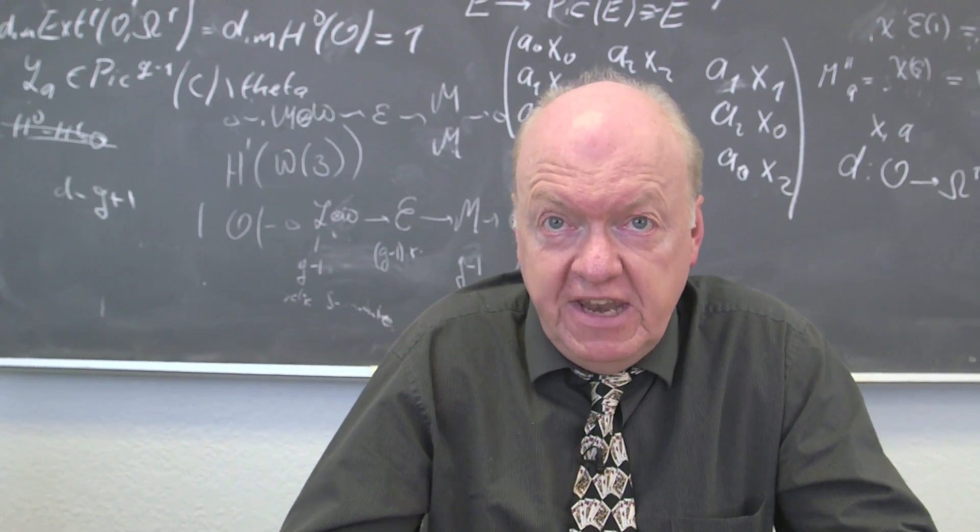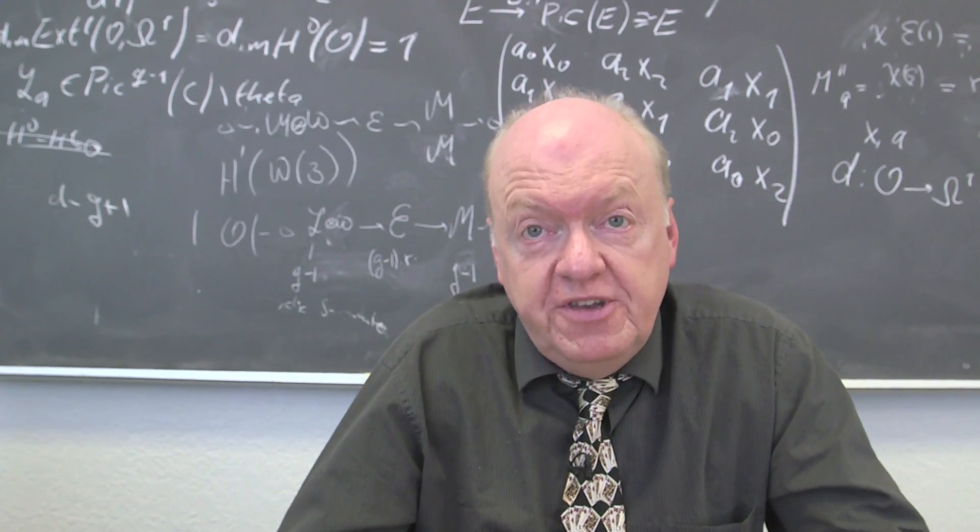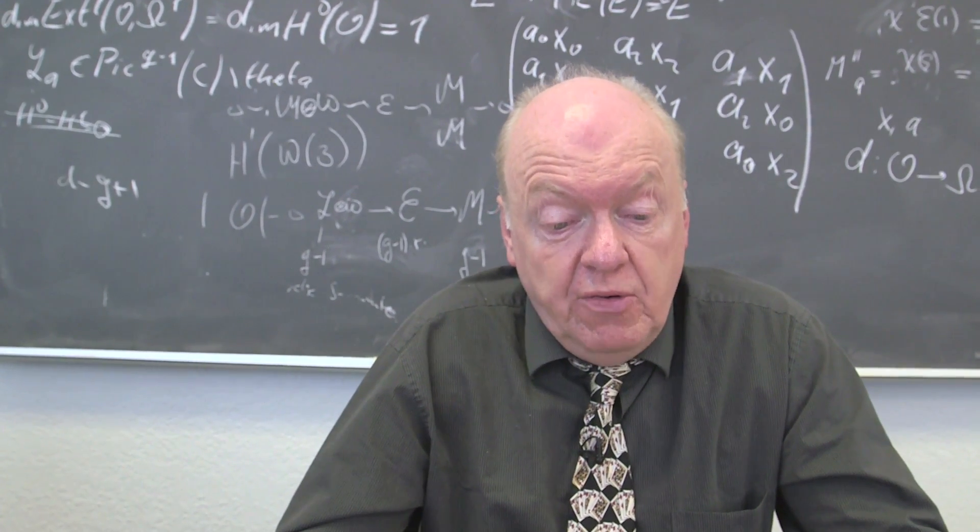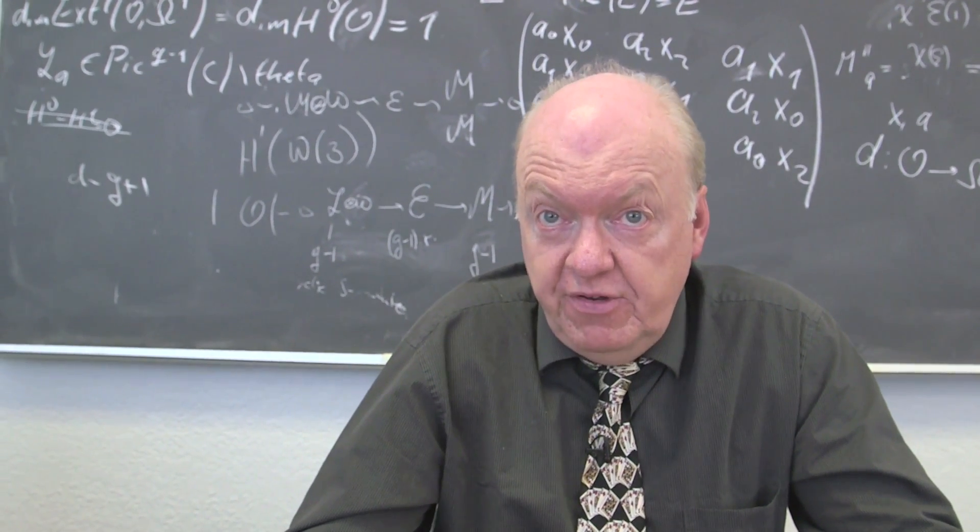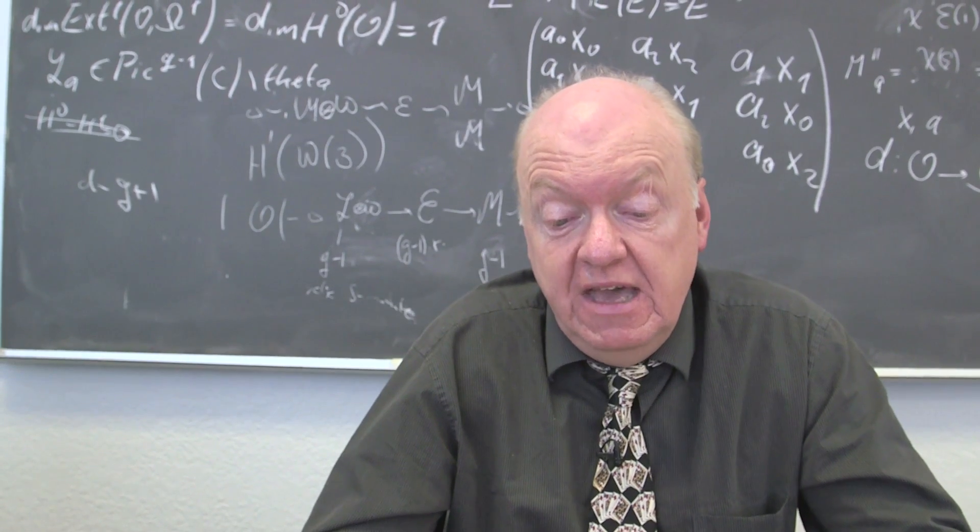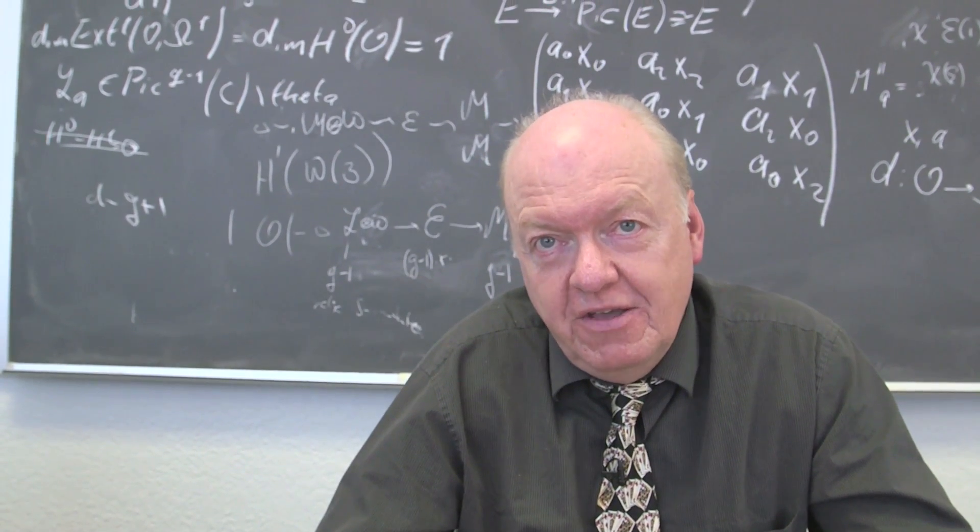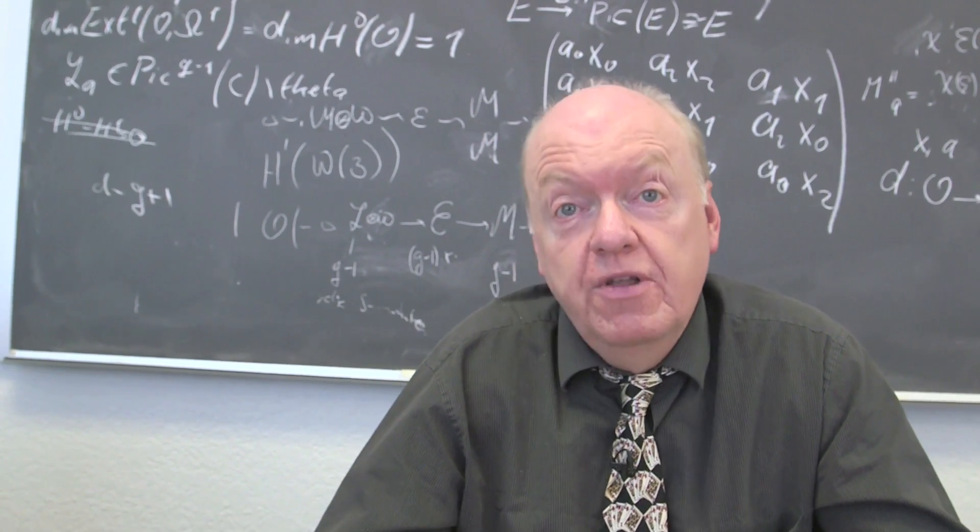And then the cards have values. An ace counts as one. Two, three up to ten is obvious. Jack, Queen, and King is the usual convention of 11, 12, and 13. So I want you to add the two values of the numbers, the cards that you have, but don't tell me that yet. So if you've got a three and a king, that would be 16. If you've got a queen, two queens, it would be 24, and so on.